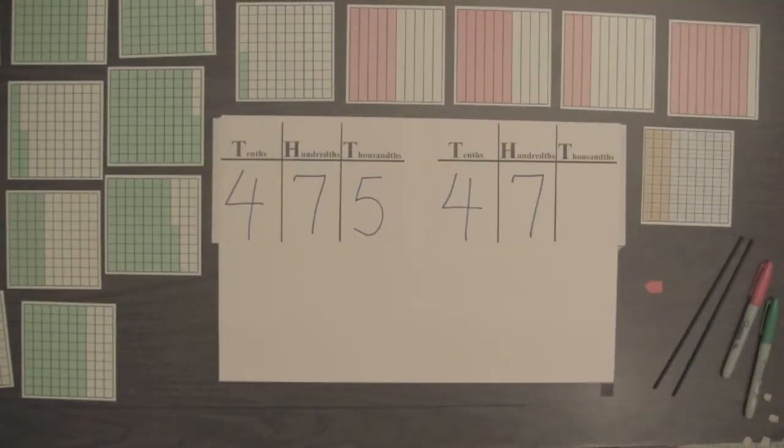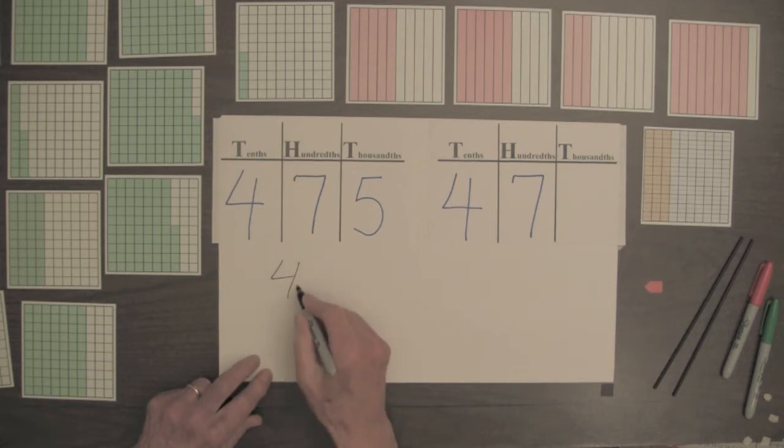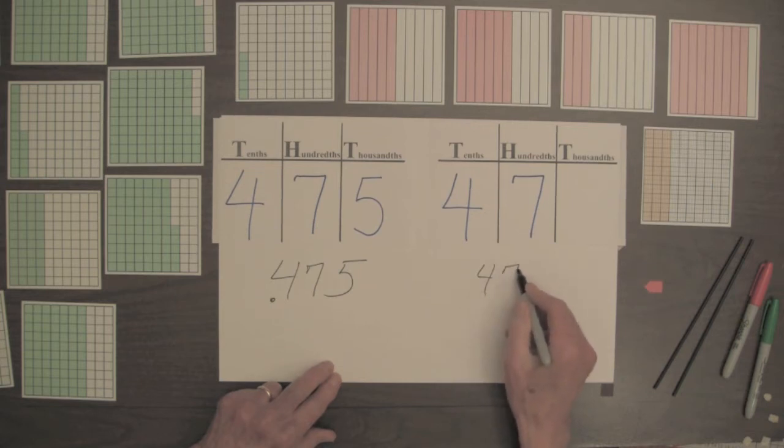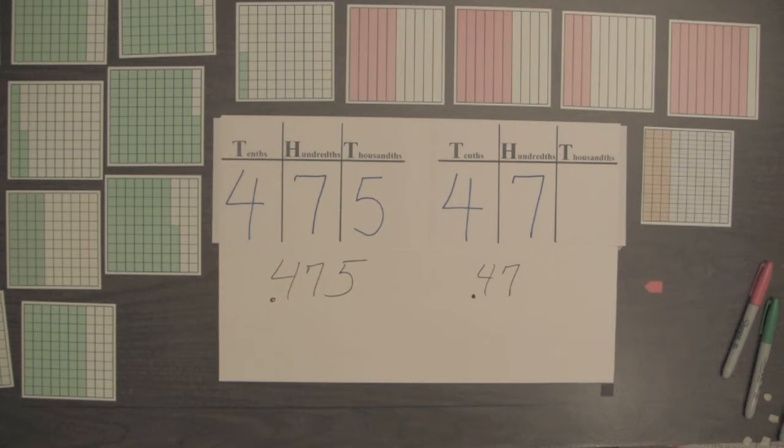Let's determine an inequality for four hundred and seventy-five thousandths and forty-seven hundredths by looking at the place value tables. If we look at the squares for these two decimals, we would find that they have four full columns shaded, tenths columns. They have seven hundredths squares shaded. And the decimal 0.475 has five thousandths shaded.